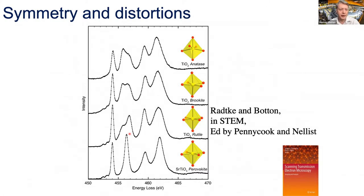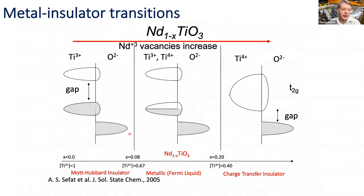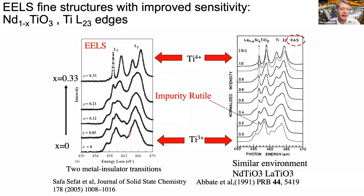An example of the metal-insulator transition in neodymium titanate: as composition changes with added vacancies, and neodymium maintains its valence state, there is a metal-to-insulator transition corresponding to titanium going from 3+ to 4+. Looking at the titanium L-edge as x changes in the chemical formula, we see titanium 3+ and 4+ consistent with what is seen in X-ray absorption spectroscopy on related compounds with the same valence transition. Essentially we probe exactly the same type of information.